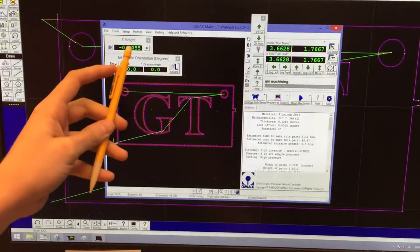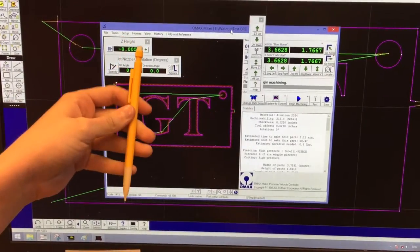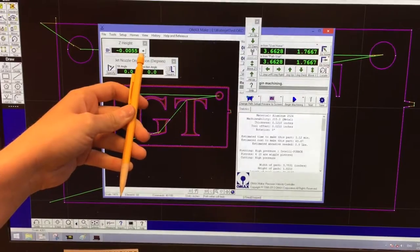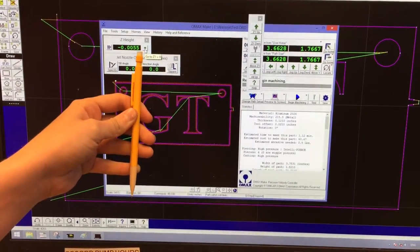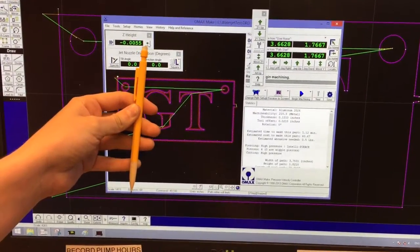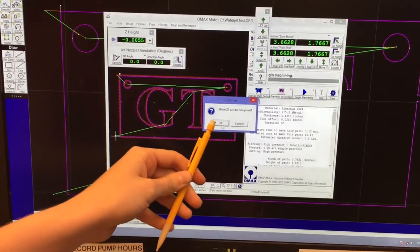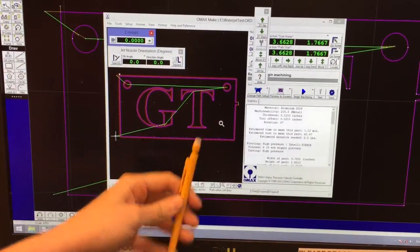So I'll put the nozzle back at the previously set height by clicking this green arrow, which sends it to what the zero height is. So I'll just click OK, and that raises it up back to the original height.